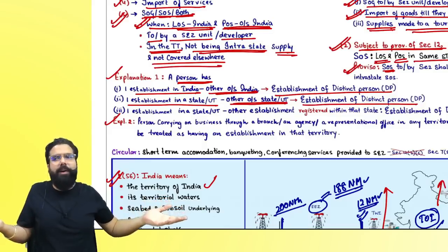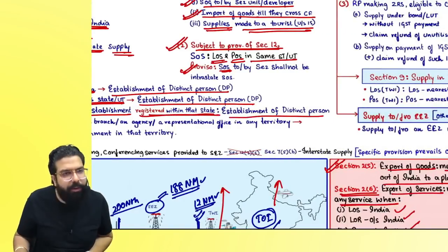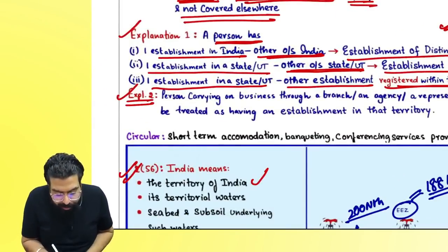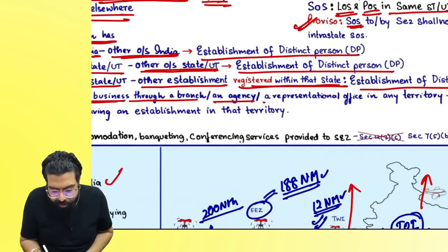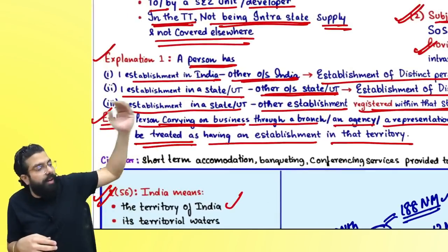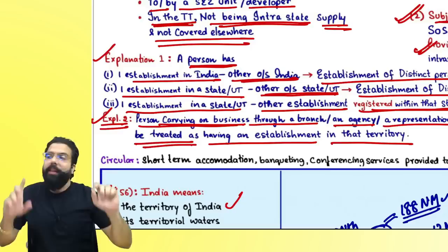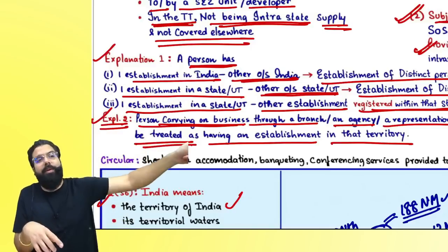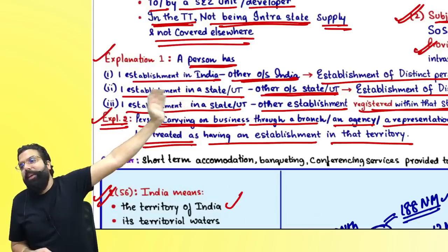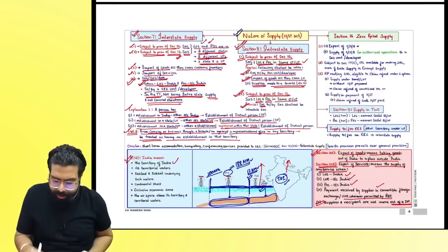Explanation 1 states: if a person has one establishment in India and one outside India, they are deemed establishments of a distinct person. Similarly, one establishment in a state or UT and another outside that state or UT are distinct person establishments. If both establishments are in the same state and both are registered, they are also distinct person establishments. A person carrying on business through a branch office, agency office, or representational office in any territory is treated as having an establishment in that territory.